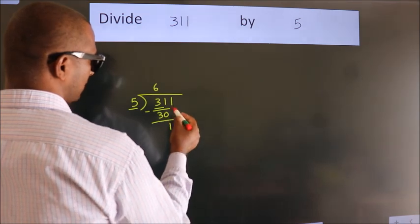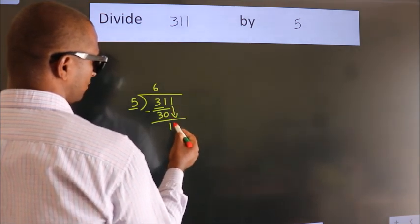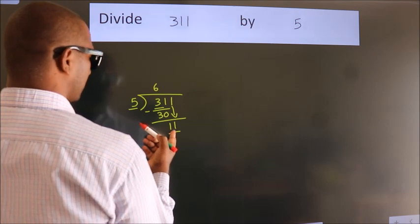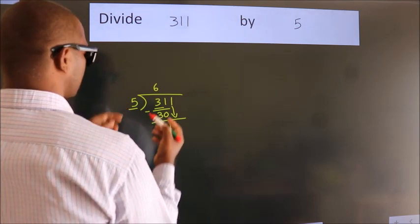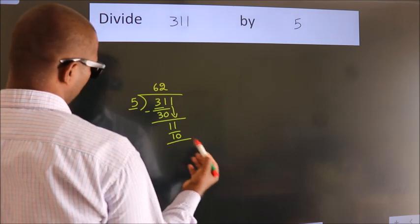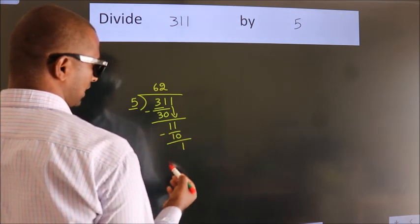After this, bring down the beside number. So 1 down, so 11. A number close to 11 in the 5 table is 5 times 2, 10. Now we subtract. We get 1.